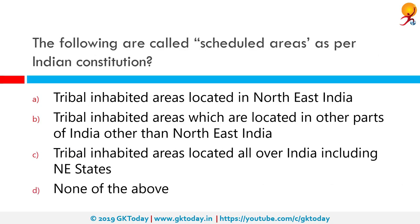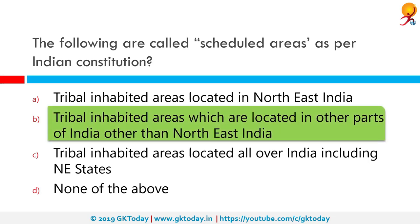The following are called scheduled areas as per the Indian constitution. Tribal-inhabited areas located in parts of India other than northeast India are called scheduled areas. Tribal areas of Assam, Meghalaya, Tripura and Mizoram are separately dealt with under the provisions given in the Fifth Schedule.